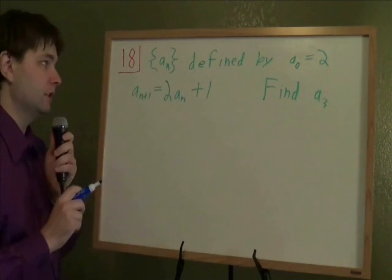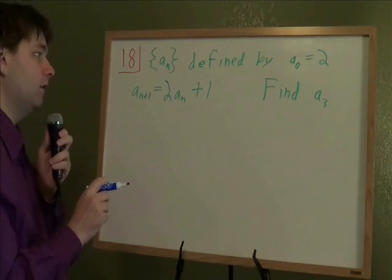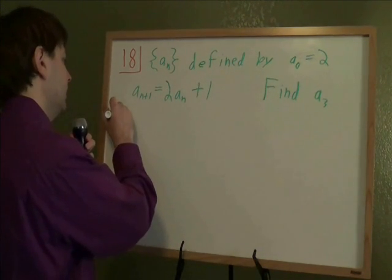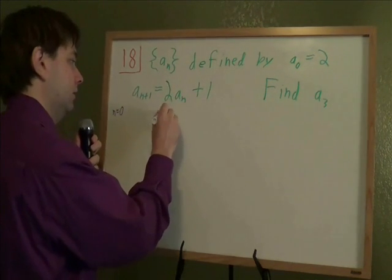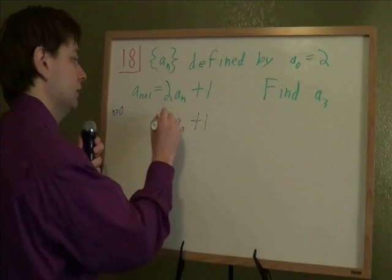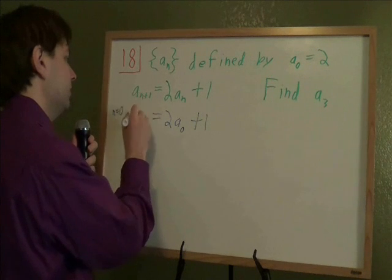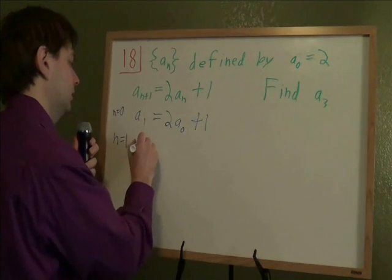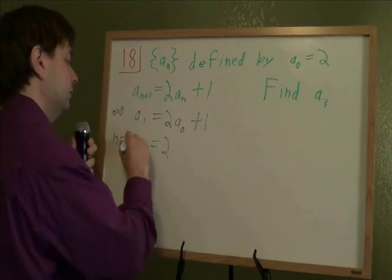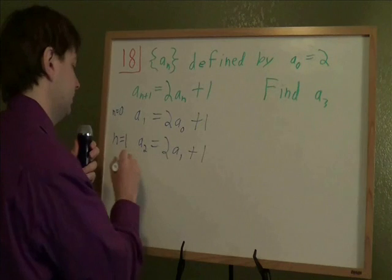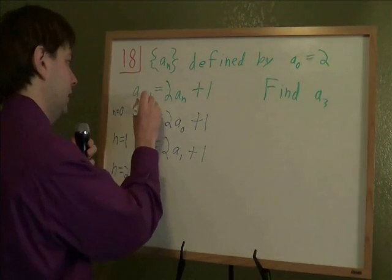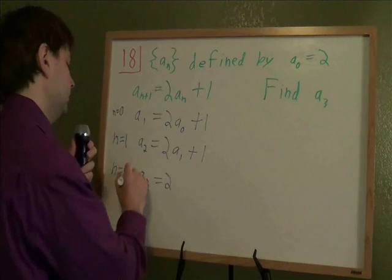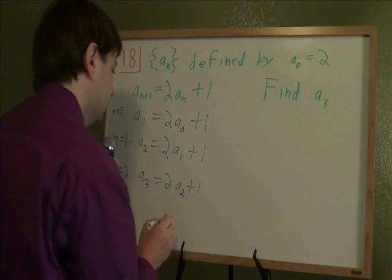This is a recursive sequence. If you're having trouble with recursion, the best first move is you just write all the formulas we're going to use out. So they give us a(n+1) equals 2a(n) plus 1. So what happens when n equals 0? Well, a(n) becomes a0. These 2 and this 1 stays the same. a(n+1), well, 0 plus 1 is 1. What happens if n is 1? Well, 1 plus 1 is 2. a(n) just becomes a1. The rest stays the same. What happens if n equals 2? Well, n plus 1, 2 plus 1 is 3. a(n) becomes a2, and the rest stays the same.